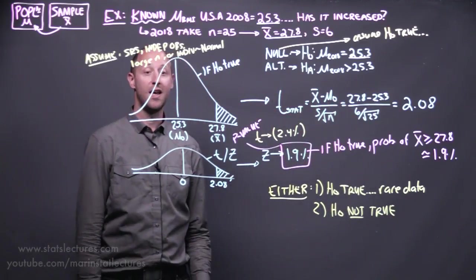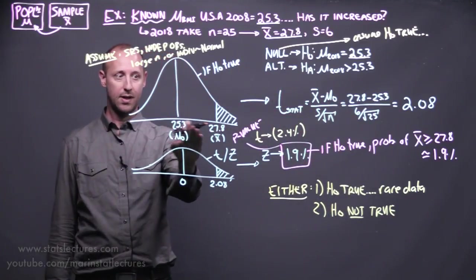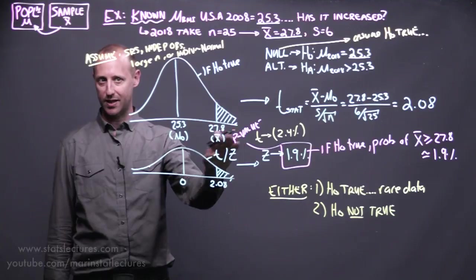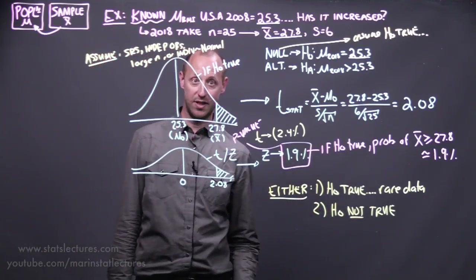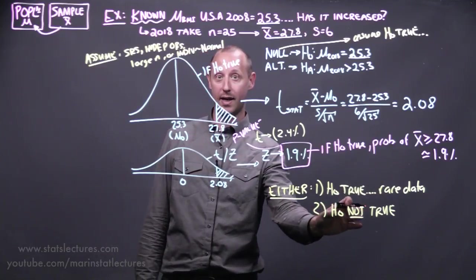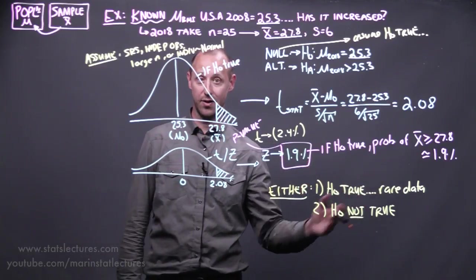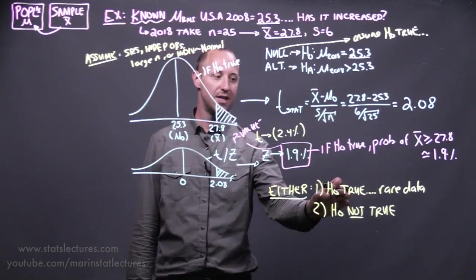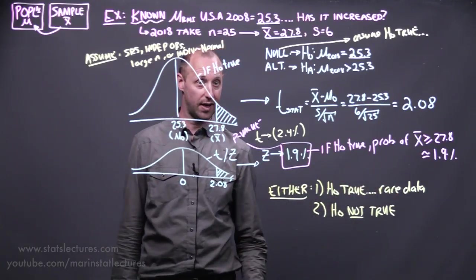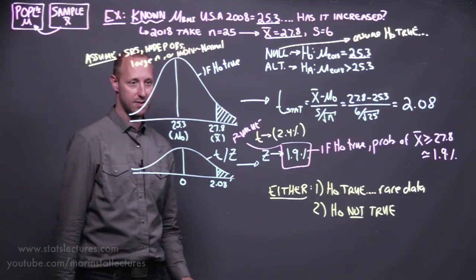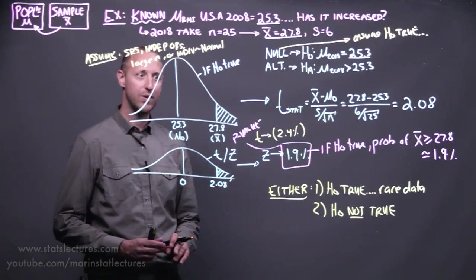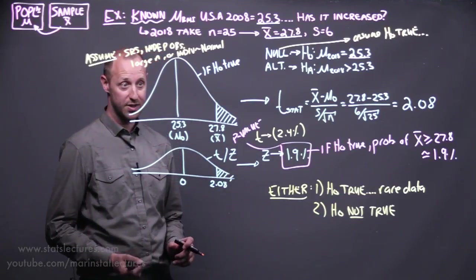And again, the reason for this is that if the null were true, what we saw in our sample wouldn't be very likely to show up. So in reality, we don't know which one of these is true. We don't know is the null false, and BMI has increased on average. Or, has there been no change, and we just got some rare data. We got something that made it appear as though it's been an increase, but in fact there hasn't. We don't know which one is true, but we can decide which one is more likely.